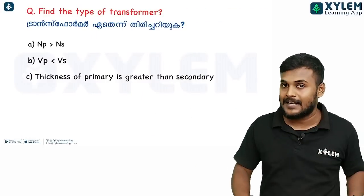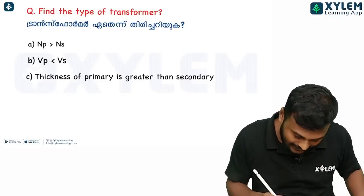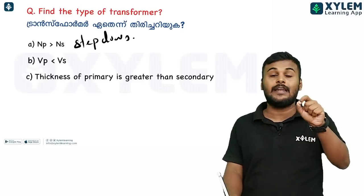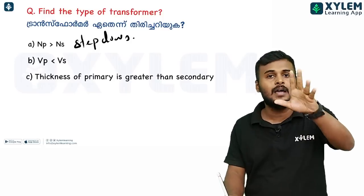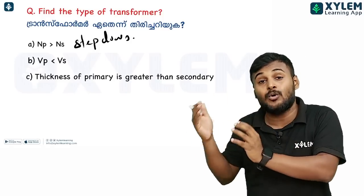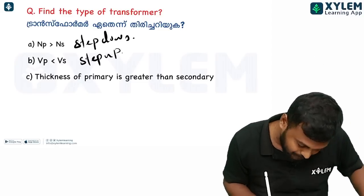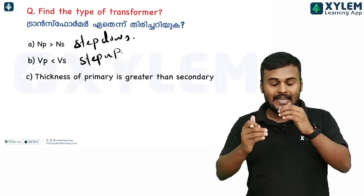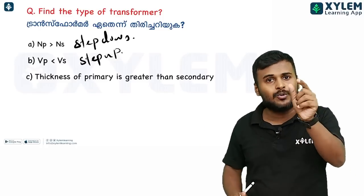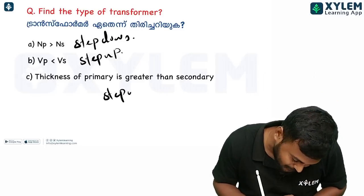What type of transformer is this? If the primary coil has fewer turns than the secondary coil, it is a step-down transformer. If the secondary voltage is greater than the primary voltage, it is a step-up transformer. The thickness of the primary coil is greater than the secondary coil in a step-up transformer. Thickness relates to the number of turns.